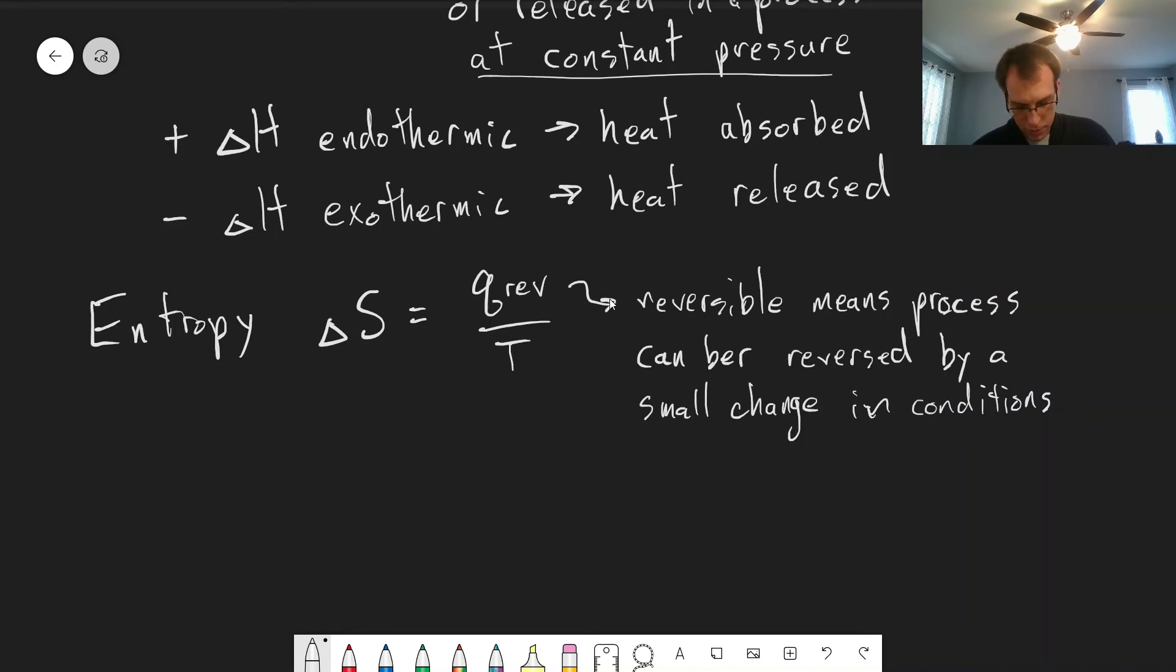Roughly speaking, entropy is a measure of disorder in the system. I'm going to put that in quotes because that's a pretty simplistic way of thinking of entropy. But for our purposes in this class, in Analogical Counselor, we're not going to think too much about entropy. And so this is good enough for what we're talking about.